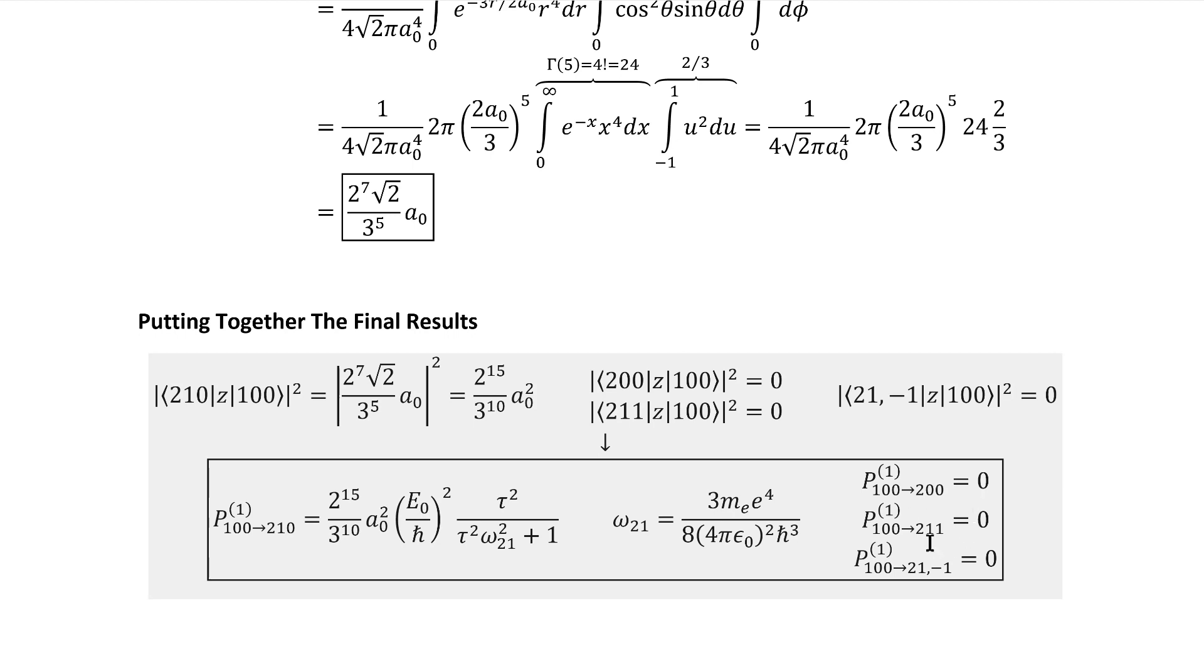And given the Wigner-Eckart theorem, we have no possibility, at least to first order, to see these kinds of transitions. And with that, we've got the predictions that we needed. We can hand these over to our hypothetical experimentalist partner, and they can put them to the test. Hopefully this proved to be an interesting exercise in using the Wigner-Eckart theorem and in doing first order time-dependent quantum mechanical perturbation theory. Thanks for watching.